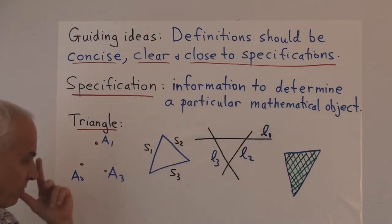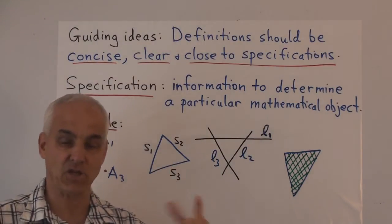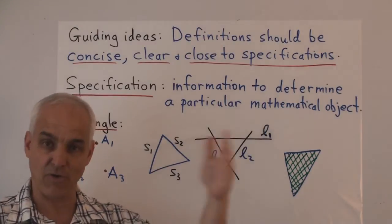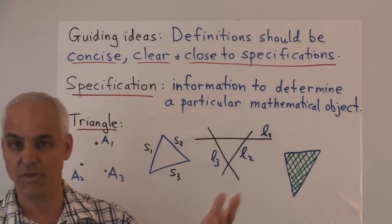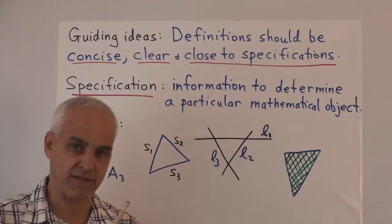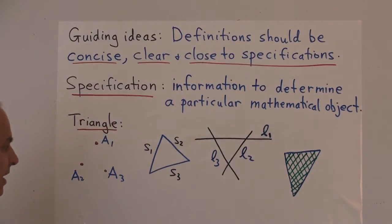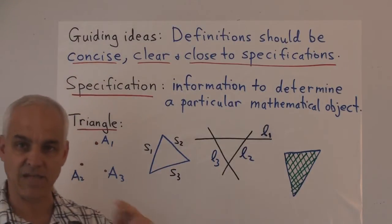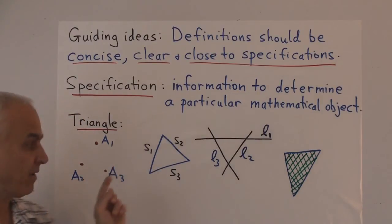But there's something a little bit more efficient about this one than these three. Suppose, for example, that we have a particular triangle in mind and we want to send the information to specify that particular triangle to our friend on the internet. So we can't draw a picture, we just want to send some amount of data. With this description, we need to send the coordinates of this point, this point, and this point. So two, two, two. Six pieces of data will specify this triangle.